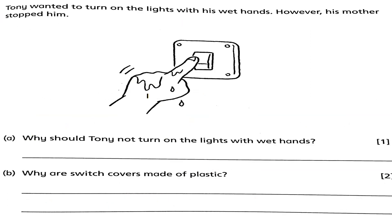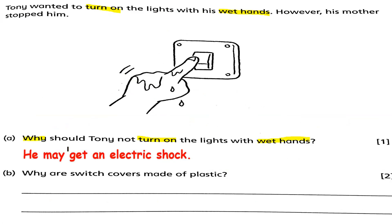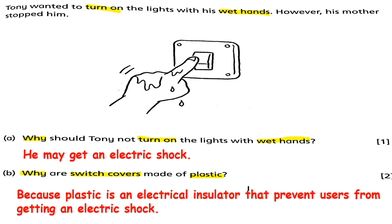Tony wanted to turn on the lights with his wet hands, but his mother stopped him. Why should Tony not turn on the lights with wet hands? He may get an electric shock. Letter B: Why are switch covers made of plastic? Because plastic is an electrical insulator, it prevents users from getting an electric shock. So it is safe to touch the switch covers because they are made of plastic.